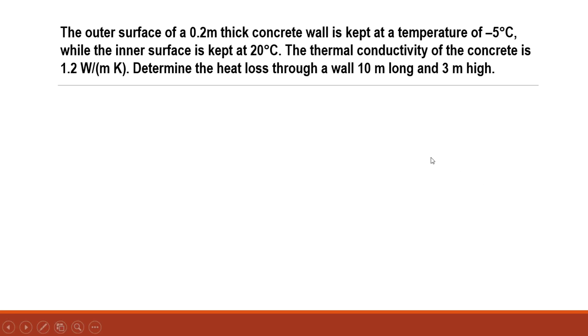The outer surface of a 0.2 meter thick concrete wall is kept at a temperature of -5°C, while the inner surface is maintained at 20°C. The thermal conductivity of the concrete is 1.2 W/(m·K). Determine the heat loss through a wall 10 meters long and 3 meters high.